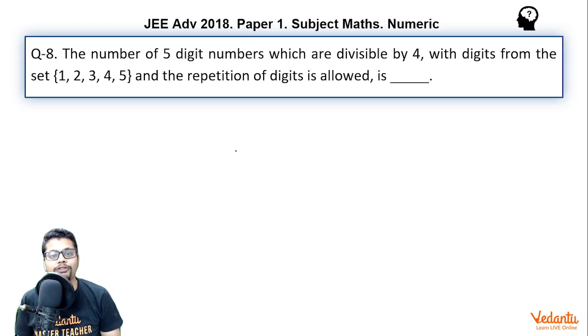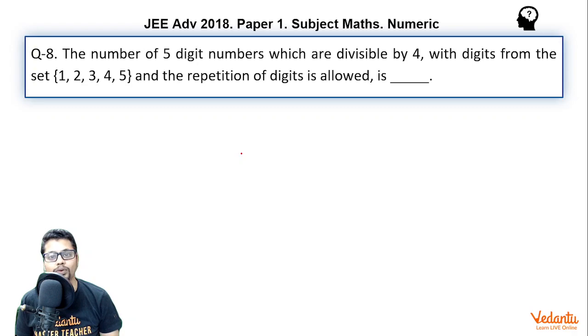The number of five digit numbers which are divisible by four, but the digits are from the set 1, 2, 3, 4, 5, and the repetition of digits is allowed, is?